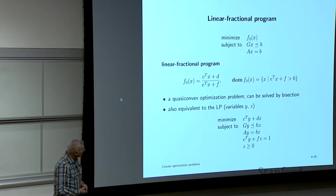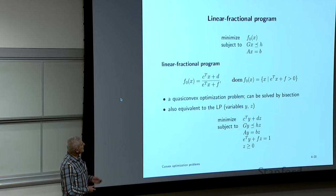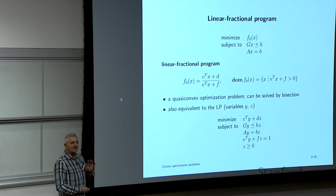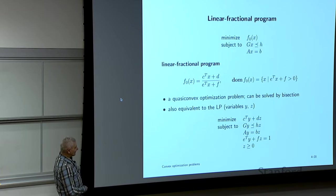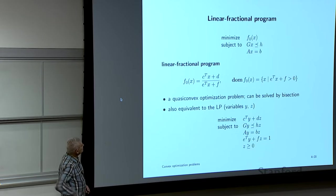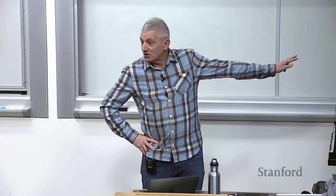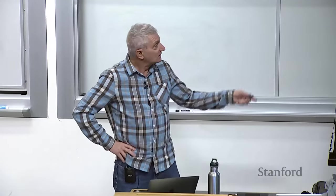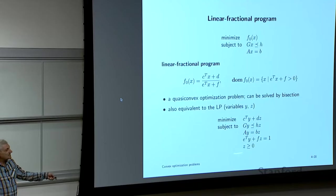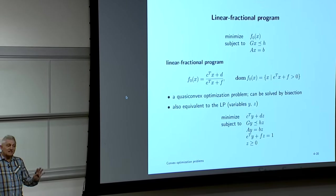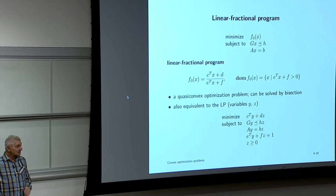What's cool — figured out maybe in the 50s or early 60s — is that you can solve a linear fractional program as a single LP. It's not obvious; you introduce new variables and re-parametrize using a perspective transformation. This is an example of a non-obvious problem transformation.